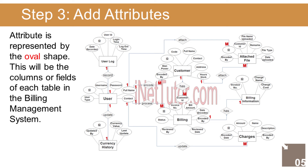The Charges entity has the following attributes: ID (primary key), Amount, Name, Description, Encoded by (foreign key), Encoded date. The Currency history entity has the following attributes: ID (primary key), Currency value, Updated by, Last update.